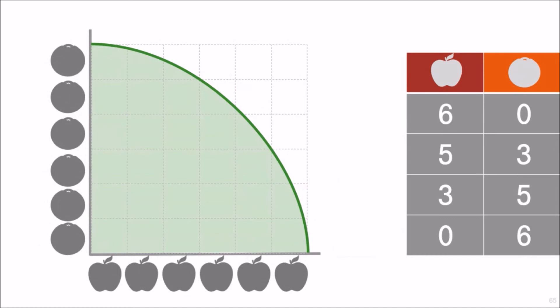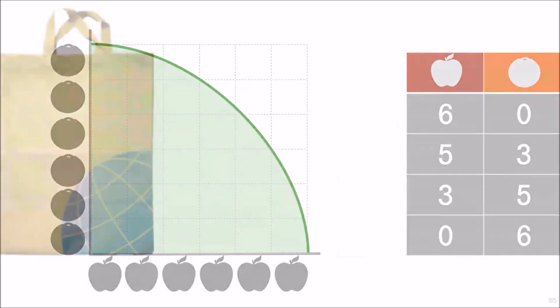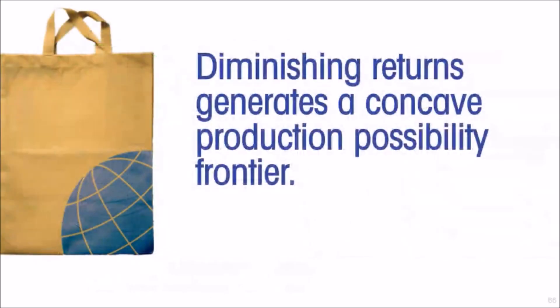Since diminishing returns exists in the real world, we draw the conclusion that production possibilities frontiers in the real world are going to be concave to the origin. Diminishing returns generates a concave production possibilities frontier.